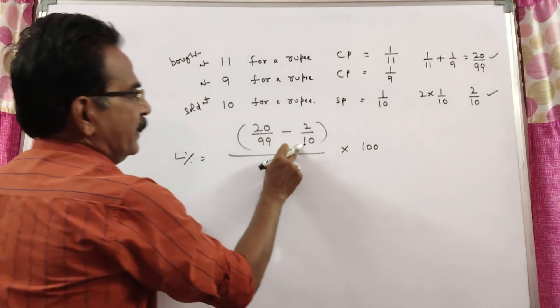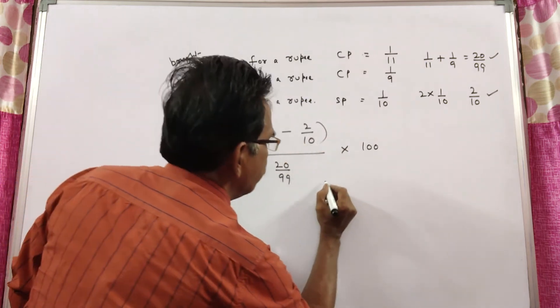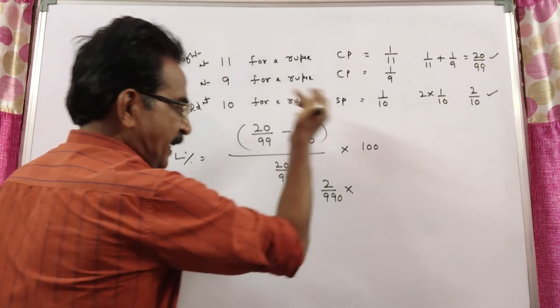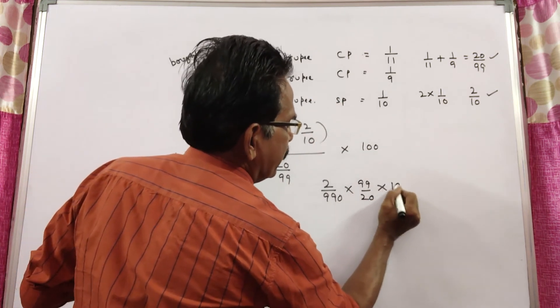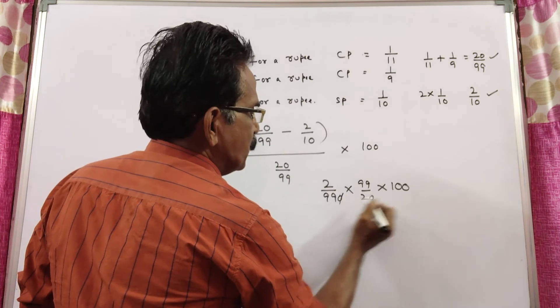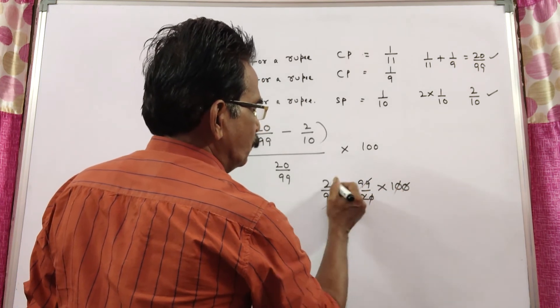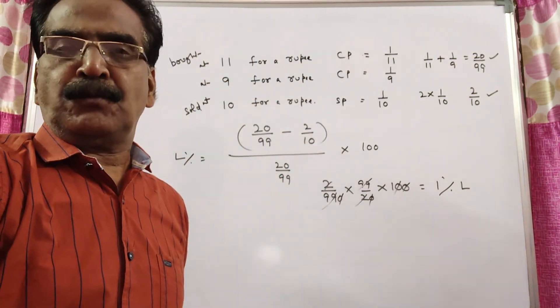Into 100. 200 minus 198, 2 by 990. Into 99 by 20. Into 100. So 1% loss. Thank you.